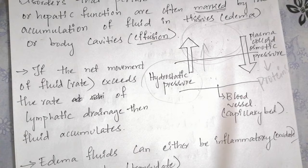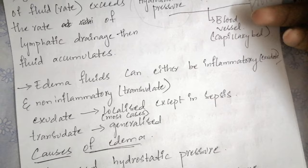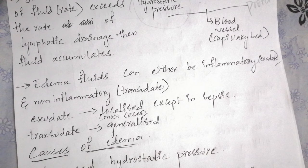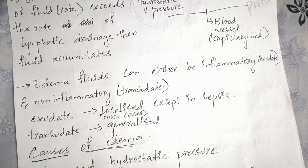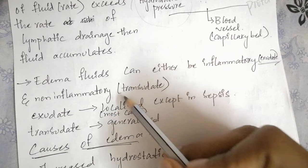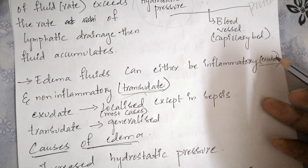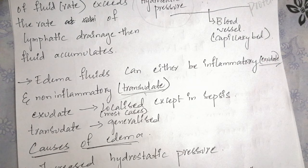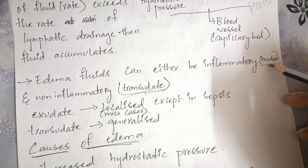There are two types of edema fluid: inflammatory and non-inflammatory. Inflammatory edema is marked by fluid called exudate, as seen in acute and chronic inflammation. Exudate is protein-rich and contains many cells — neutrophils in acute inflammation, lymphocytes in chronic inflammation, plus WBCs, RBCs, and platelets.